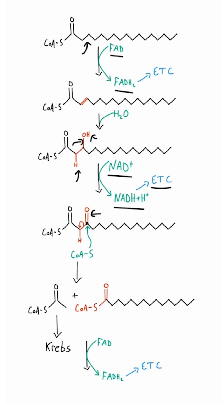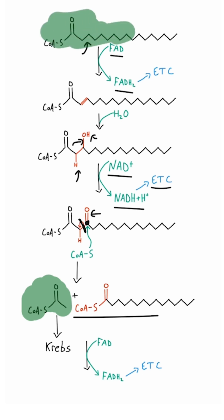Then a coenzyme A comes in and attacks the carbon on that carbonyl group, kicking off everything to the left of that carbonyl carbon. That molecule kicked off is acetyl coenzyme A, which then goes to the Krebs cycle. Notice that the resulting molecule after the coenzyme A attack looks just like the molecule we started with, only two carbons shorter.